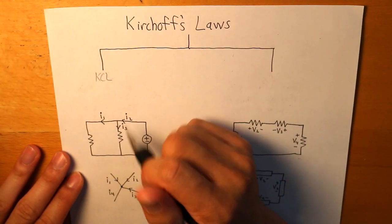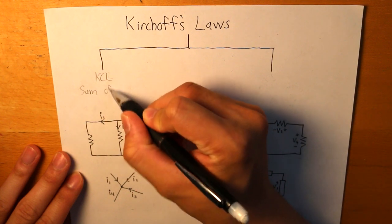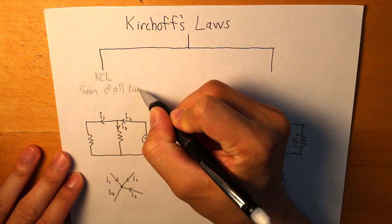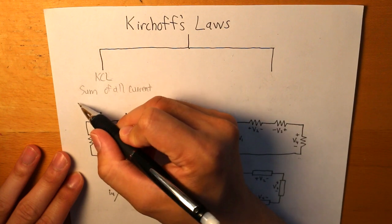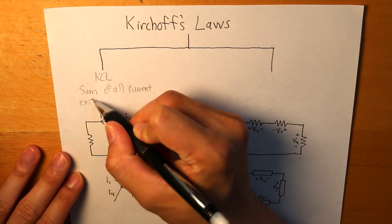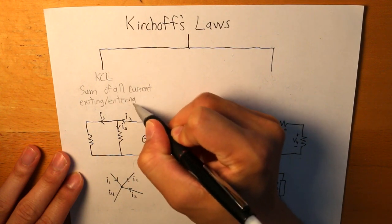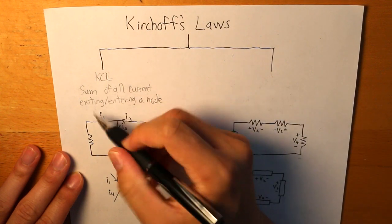And the definition of Kirchhoff's Current Law is that the sum of currents exiting or entering the node is equal to zero.